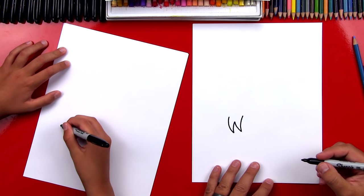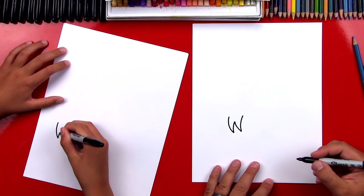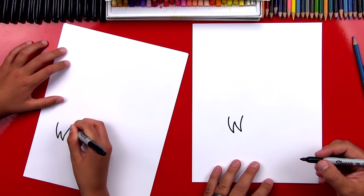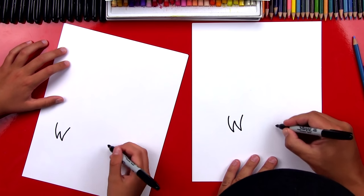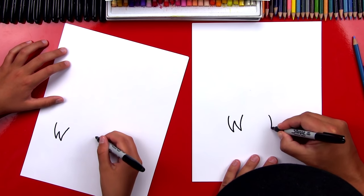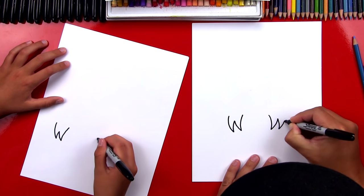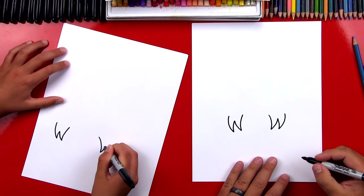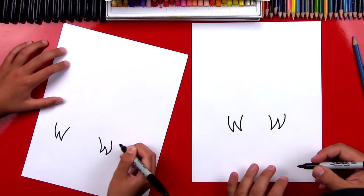Is that cool? So there's one talon. And then we're going to draw another W over here, but we're going to curve it the other direction. Good job.